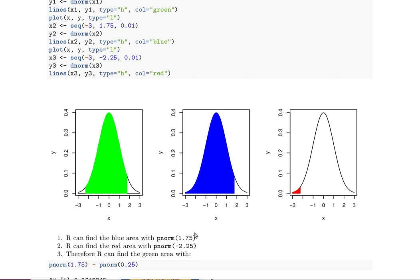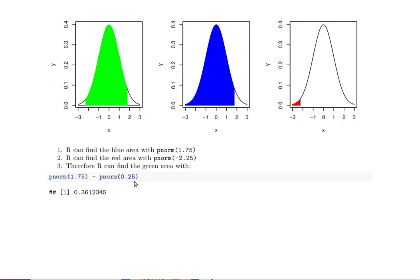So if we subtract those two it'll give us the green area. You see that little red area is this little part over here, and if we subtracted that from the blue area we'd be left with the green area. That's the whole idea.